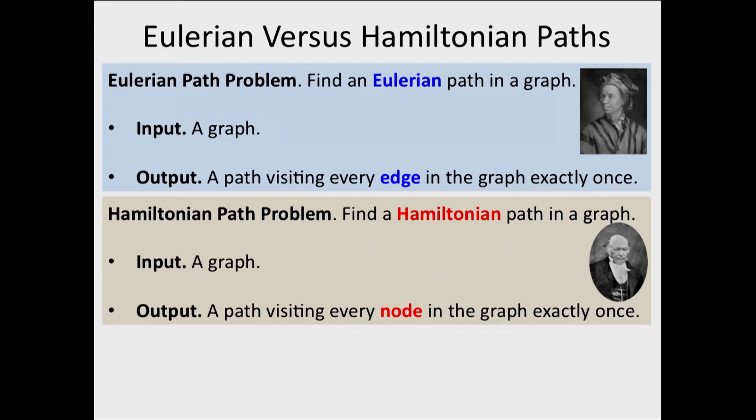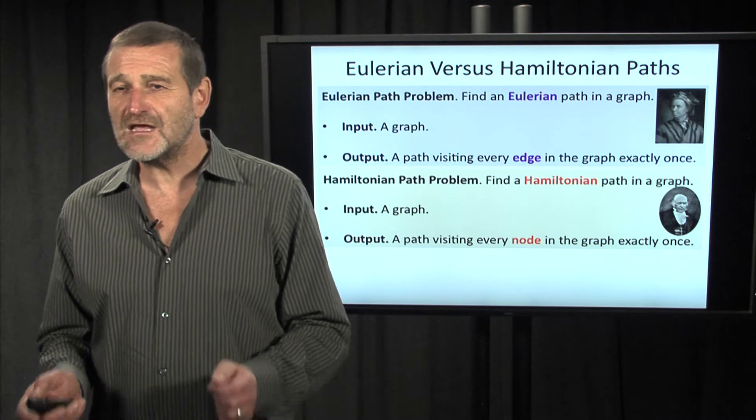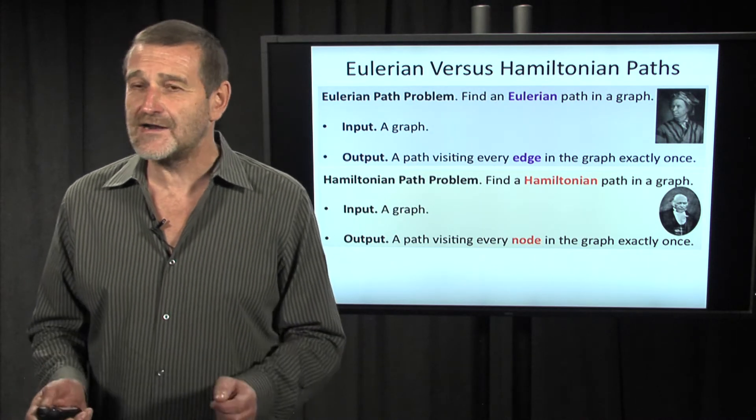In the Eulerian path problem, we want to find a path visiting every edge of the graph exactly once. In the Hamiltonian path problem, we want to find a path visiting every node exactly once. It sounds like a small, cosmetic, and unimportant difference.